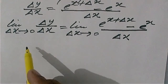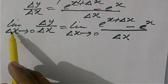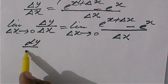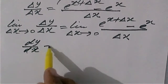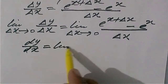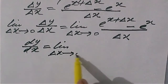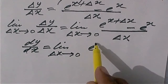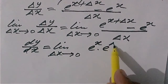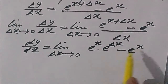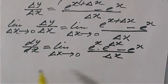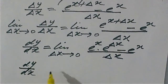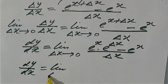By definition, the limit of delta y upon delta x as delta x tends to 0 is denoted by dy upon dx, as explained in previous videos. So dy upon dx is equal to the limit as delta x tends to 0 of e raised to the power x plus delta x minus e raised to the power x, divided by delta x. By the theory of indices, we may decompose these two powers as e raised to the power x multiplied by e raised to the power delta x.